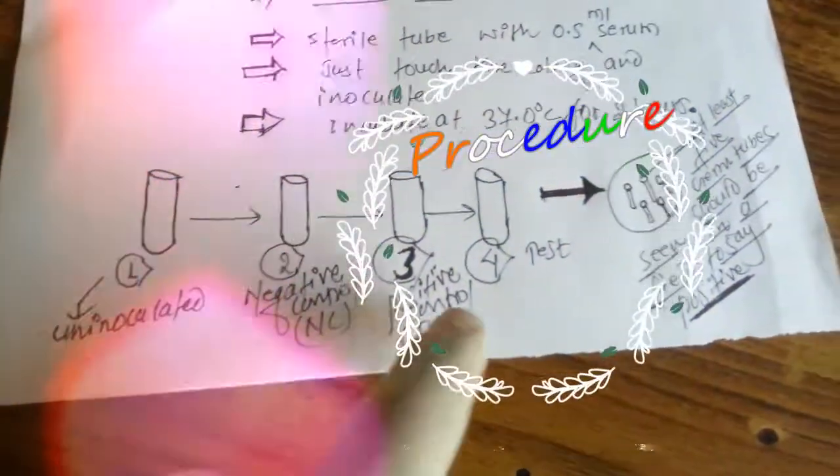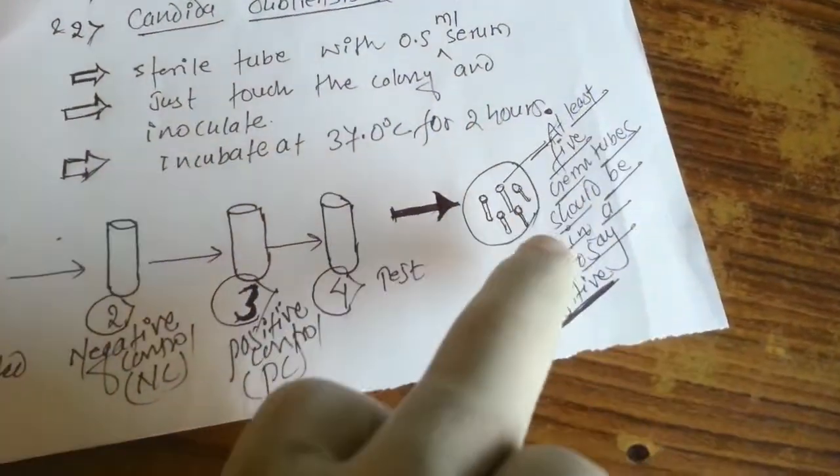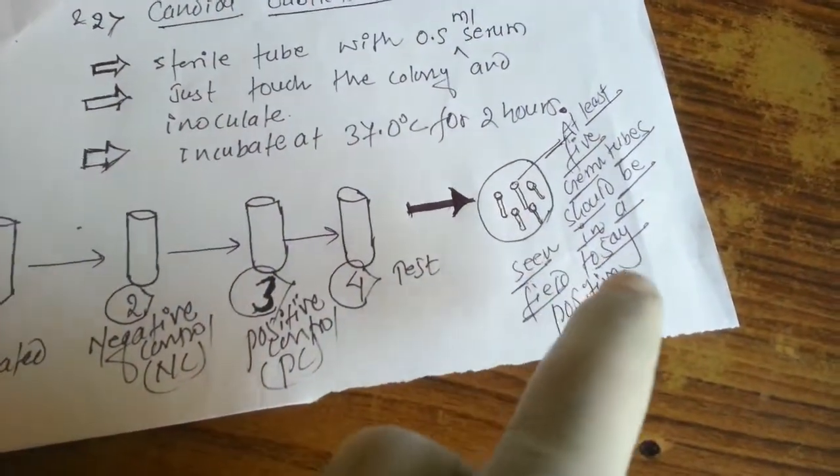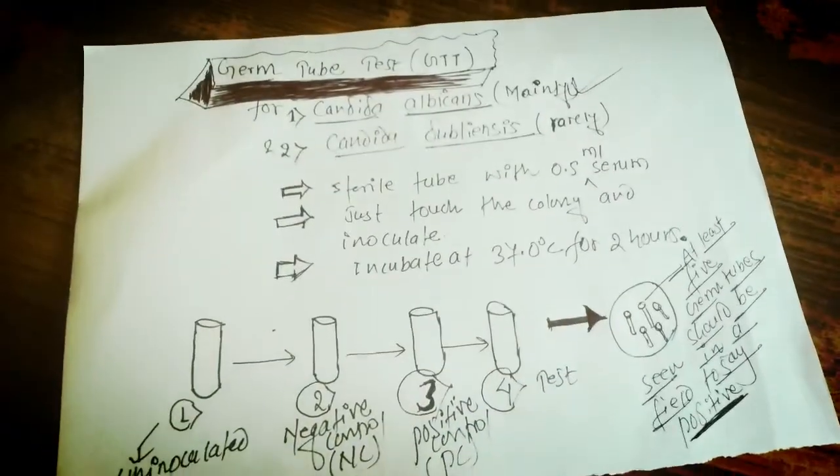Now about procedure. 50 microliters of human serum was pipetted in a small test tube, but we can also use bovine or rabbit serum. Using a sterile applicator, inoculate the serum by just touching a yeast colony from the culture plate, and it was then incubated at 37 degrees Celsius for two hours.